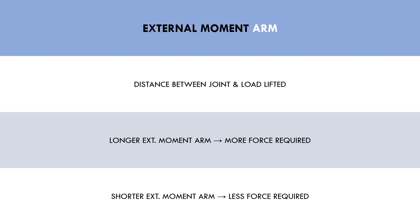First is the external moment arm. This refers to the distance between the fulcrum and the external load. In this case the application of force comes from the muscle pulling on a joint, which means that the external moment arm is the distance between the moving joint and the load being lifted. A longer external moment arm makes the lift more difficult while a shorter moment arm makes the lift easier.